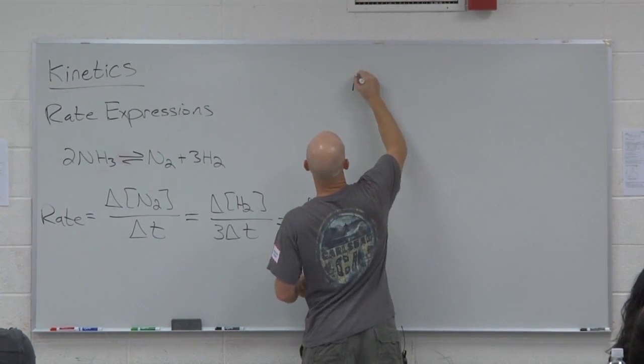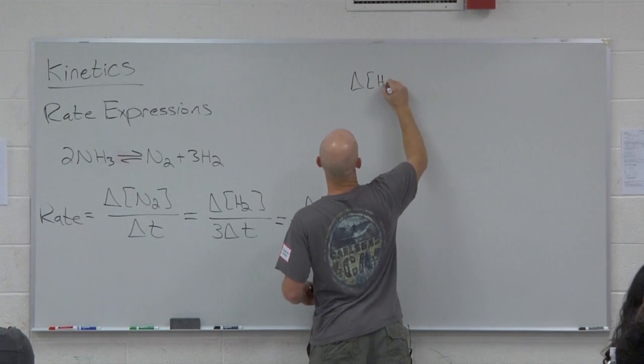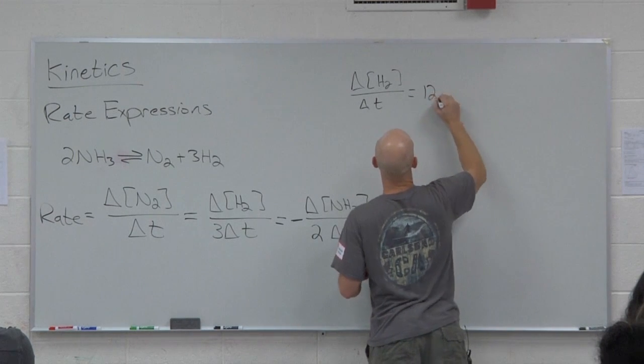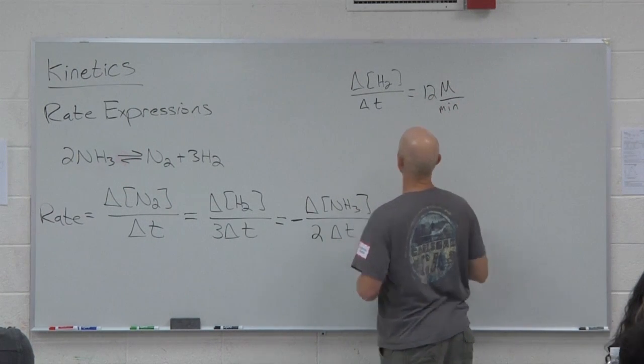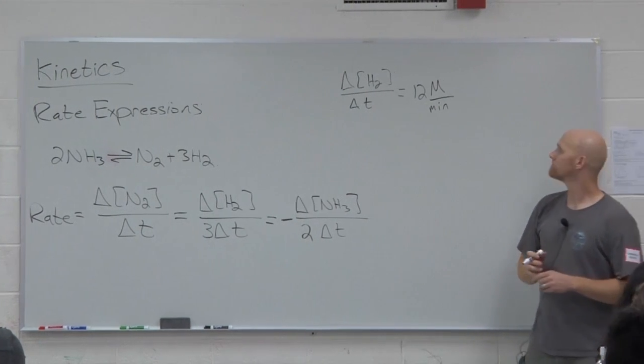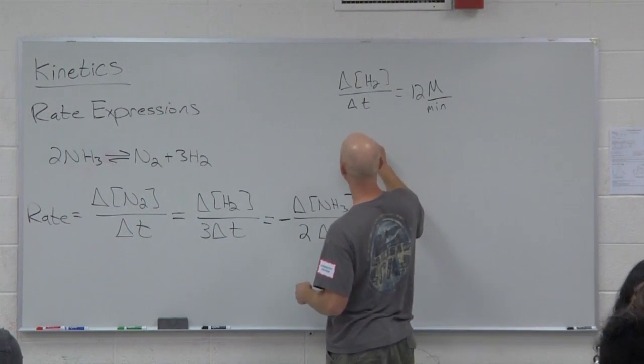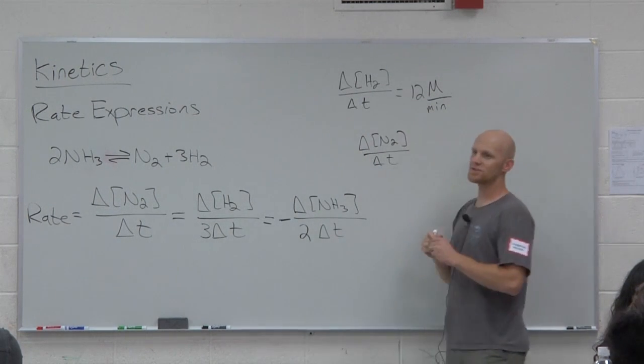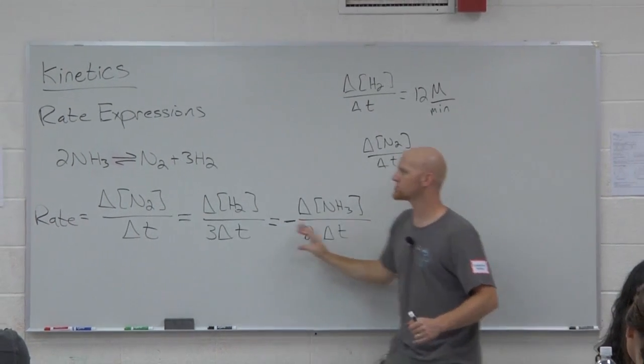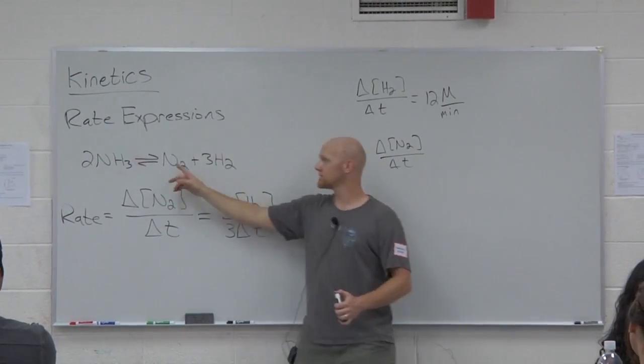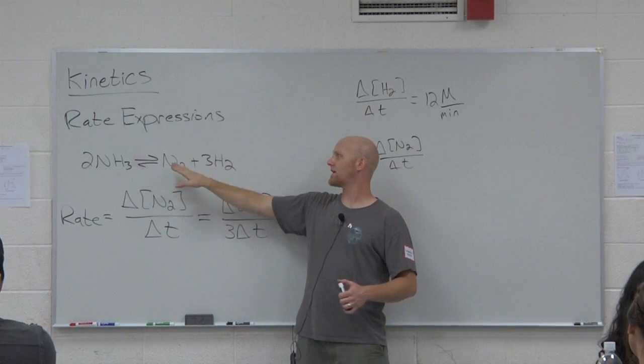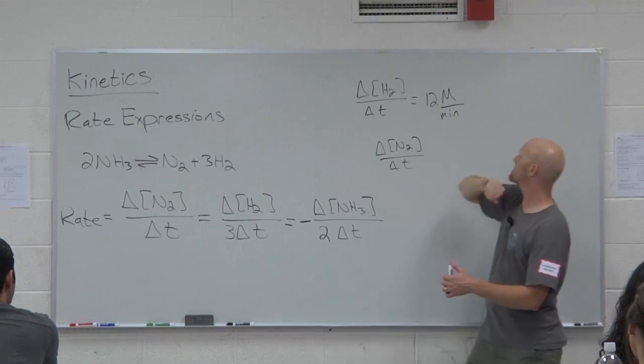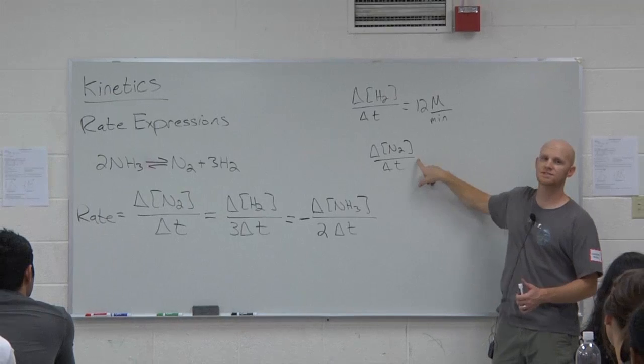For example, if I told you that the rate of change of hydrogen over time was equal to 12 molar per minute, then the question is, how quickly is nitrogen being produced? Well, here's the deal. If you're actually dealing with numbers, I would highly recommend you don't actually use the rate expressions. Don't go there. Just look at the stoichiometry. So who's being produced faster, nitrogen or hydrogen? Hydrogen. How many times faster? Three times faster. And so if the hydrogen's being produced at 12 molar per minute, how fast is the nitrogen being produced?